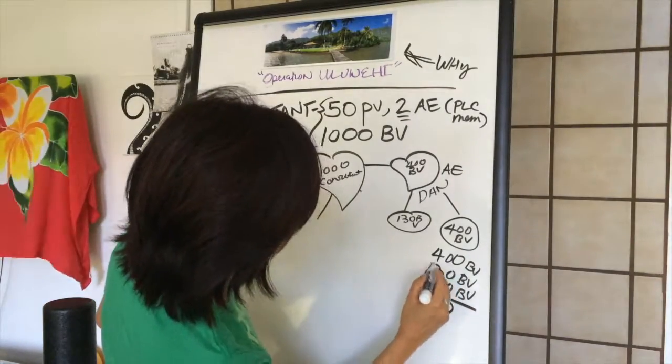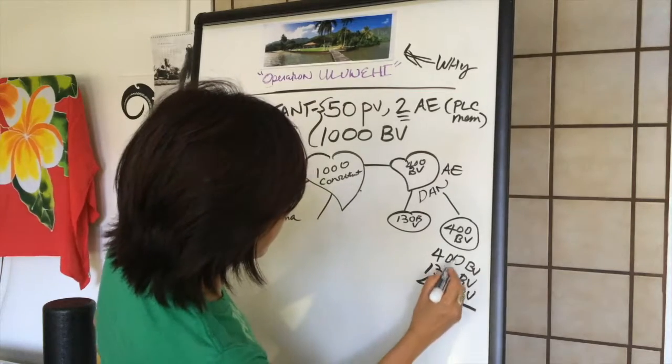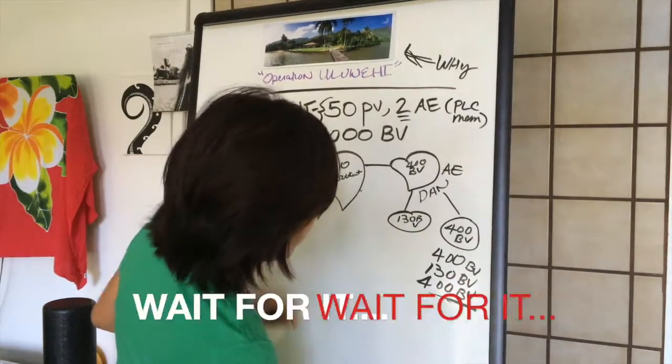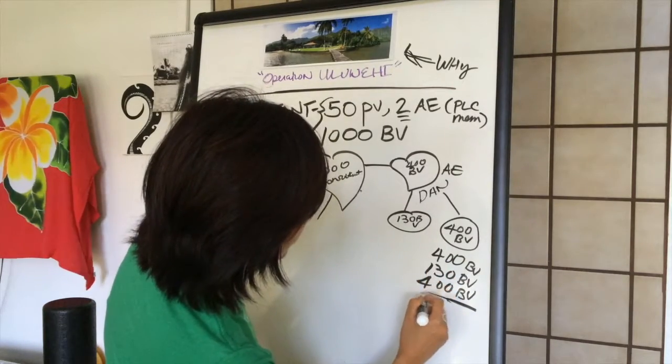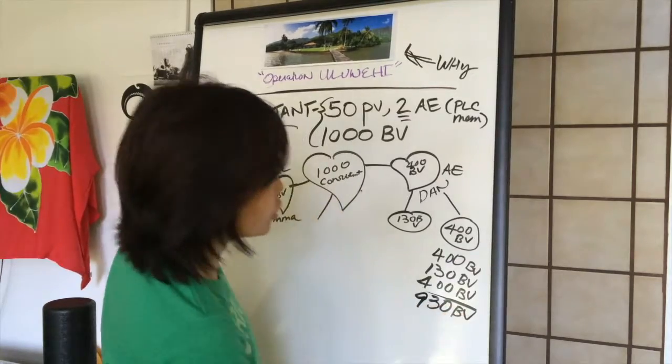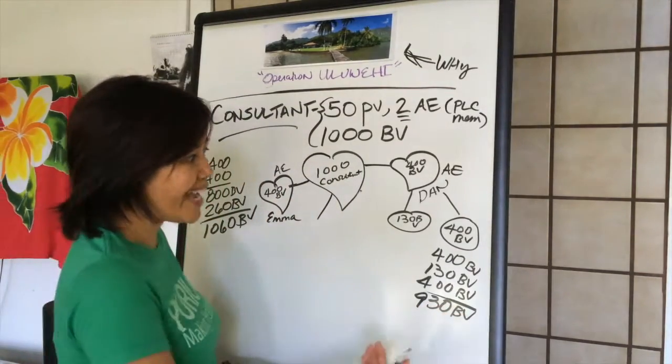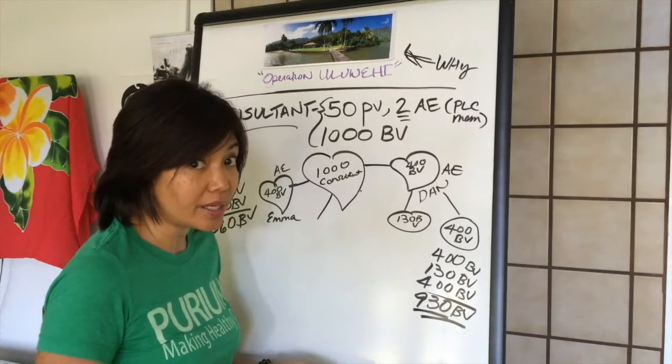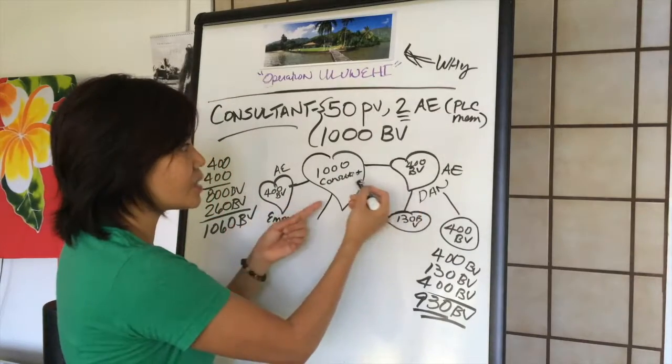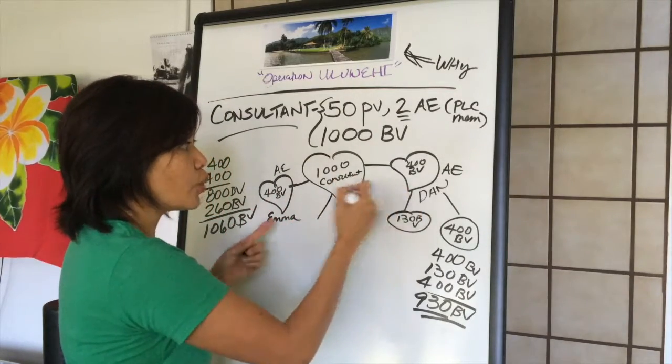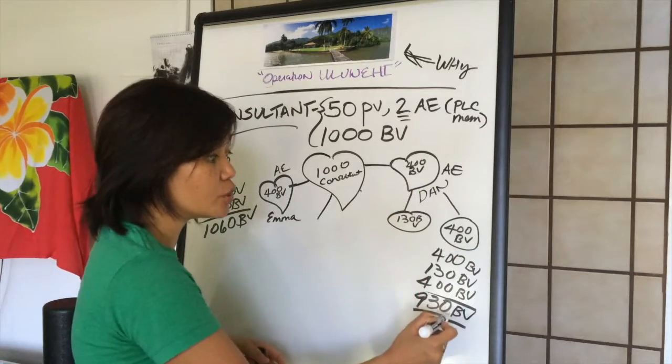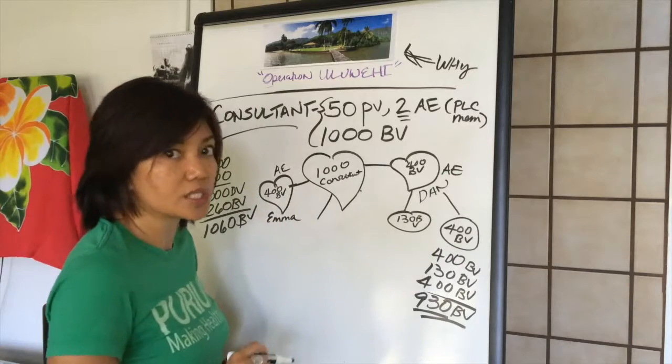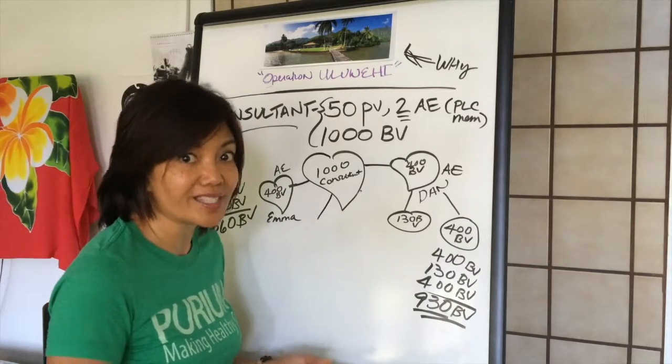What is that? Oh my gosh, I can't even read my own writing. That's 800, 930 BV. So what? Dan is already close to now becoming a consultant. You see where I'm going with this guys? So it doesn't necessarily have to be you bringing all the volume direct to you. But if you help others to succeed, help them to get to consultant, then you will easily get to consultant and director and executive. That's how it works. It's so awesome.